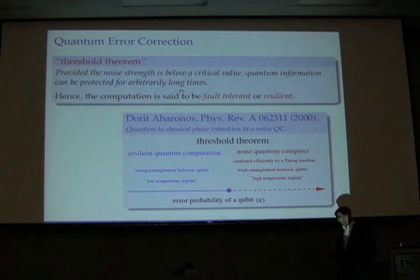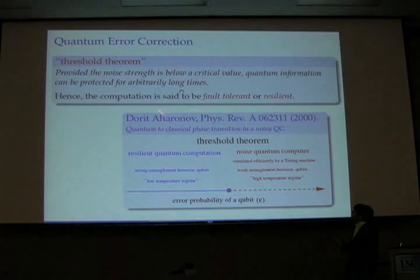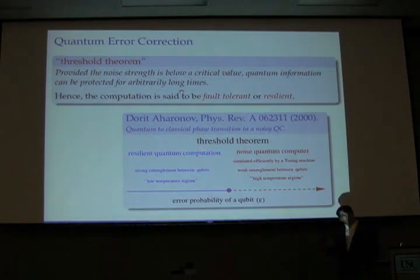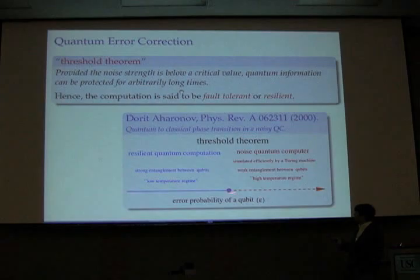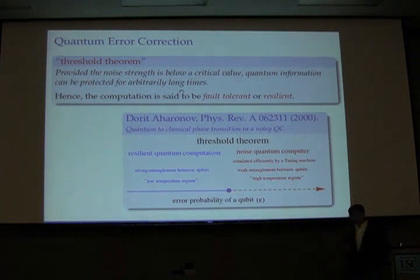An important result that we learned yesterday is the threshold theorem: if you are below a certain noise strength, then you can protect your quantum computer for arbitrarily long times. In a paper from 2000, Torit Cheranov made a very nice analogy with the theory of quantum-to-classical phase transitions. If you are below the error probability threshold for a qubit, you are in a resilient, strong-entanglement regime — the low-temperature regime where resilient quantum computation is possible. Above a certain noise strength, the quantum computer is noisy and you lose the possibility of creating strong entanglement between your qubits. This is like the high-temperature regime.